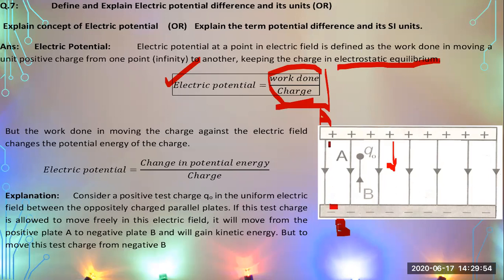When you move a charged particle from point B to point A, you change its energy and at the same time you are doing some work. Change of energy is basically equal to work done. The work done per unit charge equals the change in potential energy, because potential energy differs at each point. So electric potential is the change in potential energy per unit charge.